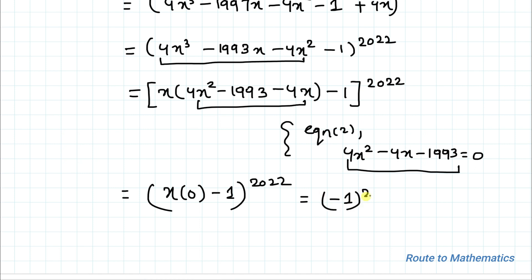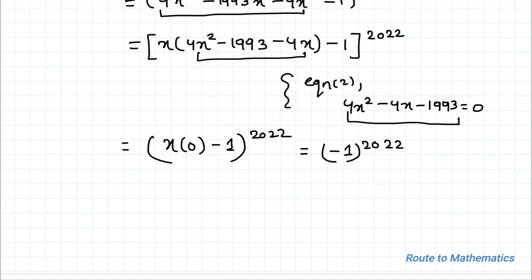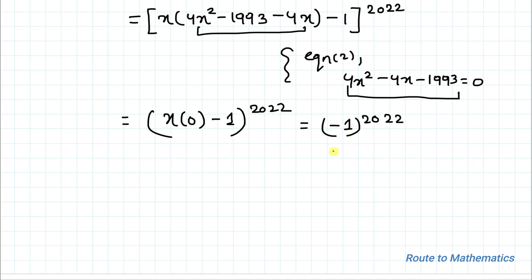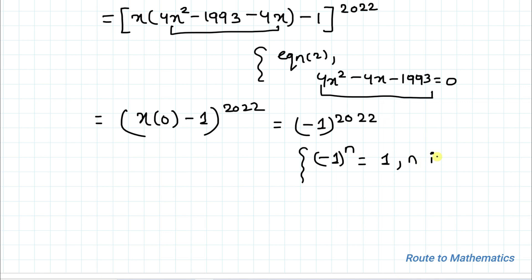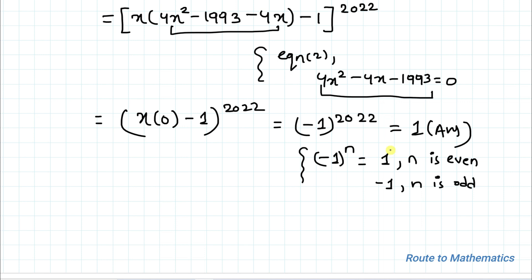We apply the exponential rule: (minus 1) to the power n equals 1 when n is even, and minus 1 when n is odd. Here we have 2022, which is an even number, so (minus 1) to the power 2022 equals 1. That is our answer! I hope you have understood the solution. Thanks for watching — please subscribe to my channel and click the bell icon for more such interesting videos.